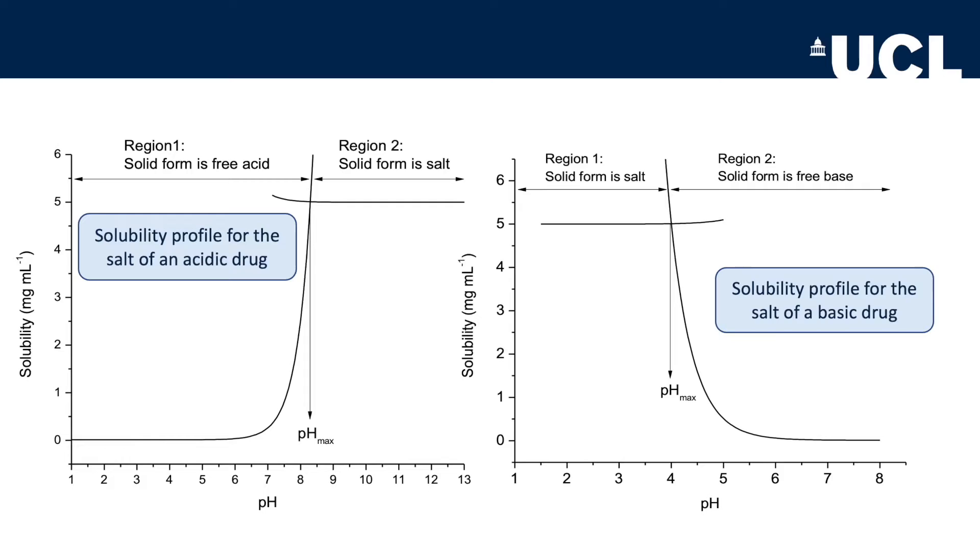There is one very important point on the curve that we should talk about: pH max. This is the pH at which the plateau starts, and it's a very interesting value because of what happens to any excess solid present either side of it. On one side of pH max, any excess solid will be a salt, and on the other, it will be a free acid or base. That's a big concept to get your head around.